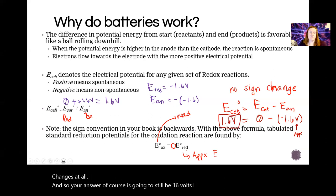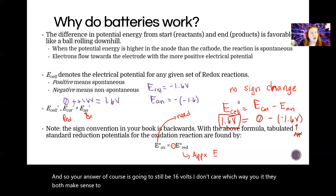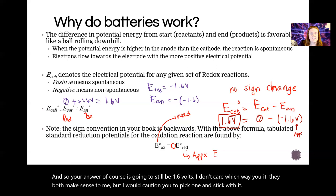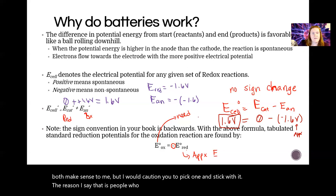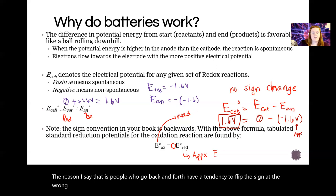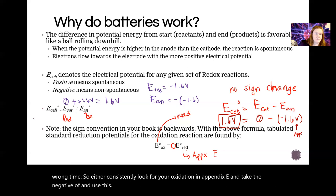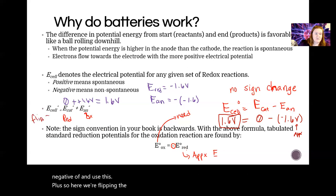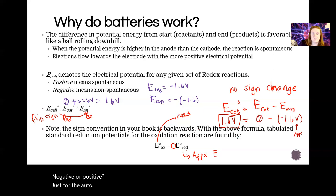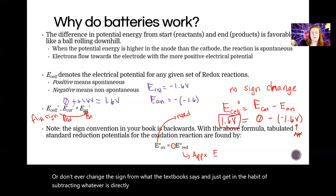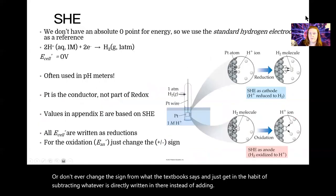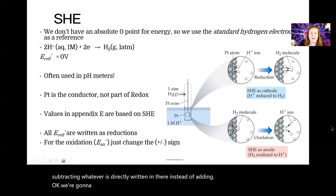I don't care which way you do it — both make sense — but I would caution you to pick one and stick with it. People who go back and forth have a tendency to flip the sign at the wrong time. Either consistently look up the oxidation potential in Appendix E, take the negative, and add; or never change the sign from what the textbook says and always subtract whatever is directly written there.